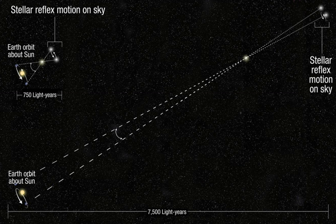This method was proposed by Edmund Halley in 1716, although he did not live to see the results. The use of Venus transits was less successful than had been hoped due to the black drop effect, but the resulting estimate, 153 million km, is just 2% above the currently accepted value of 149.6 million km.